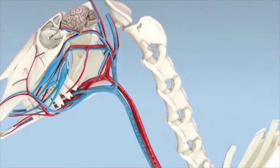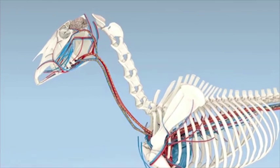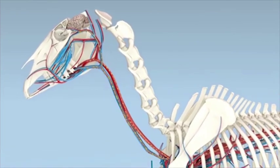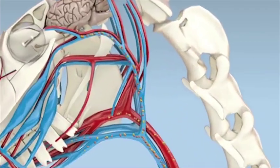These hormones then circulate throughout the body where they regulate the function of various organs. The release of hormones from the pituitary gland is controlled by the hypothalamus.